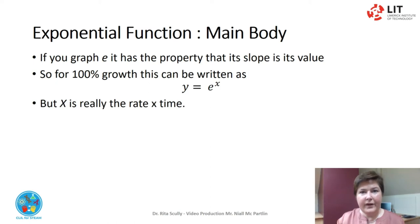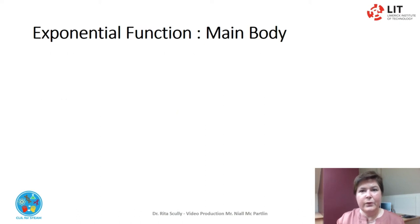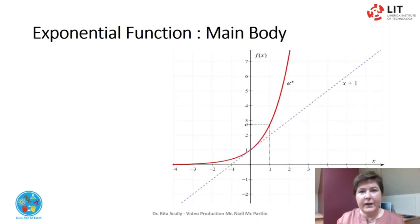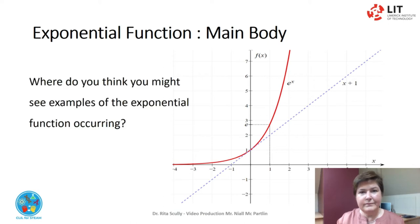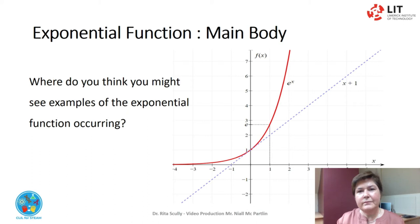Rate by time. As the rate is usually 100%, we do not see it, but it is important to bear that in mind in some of the following examples. Here we can see the graph of exponential function versus linear growth. Where do you think you might see examples of exponential function occurring — 100% continuous growth? Where might that occur?